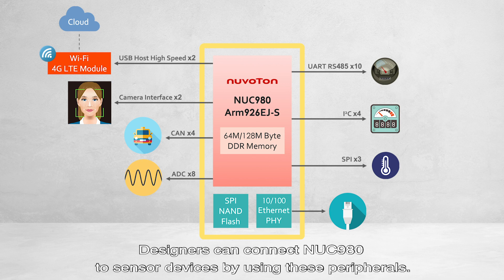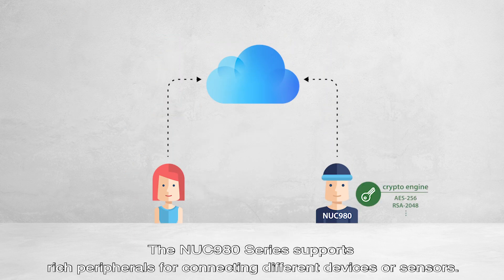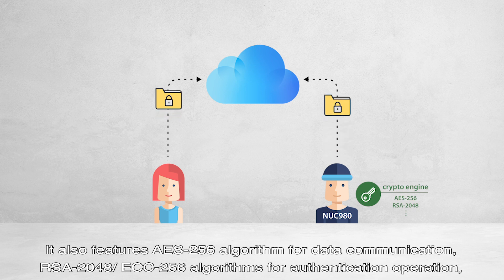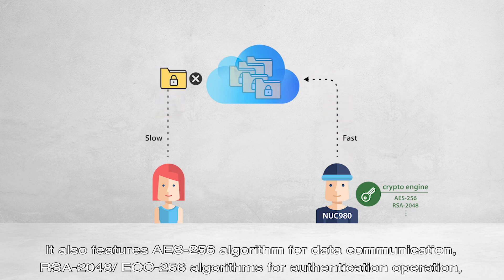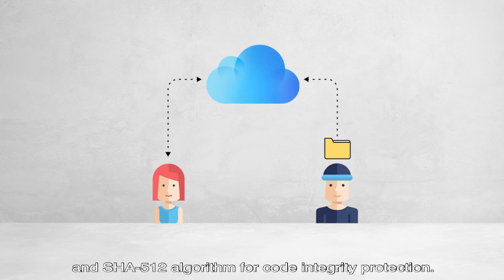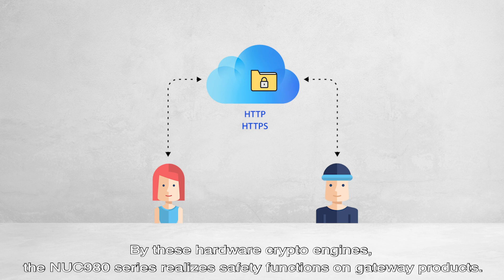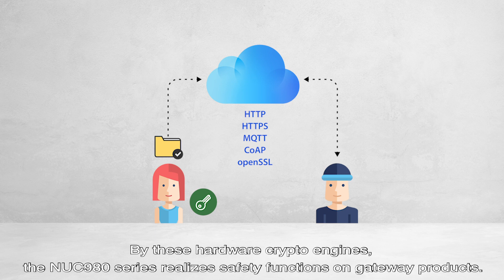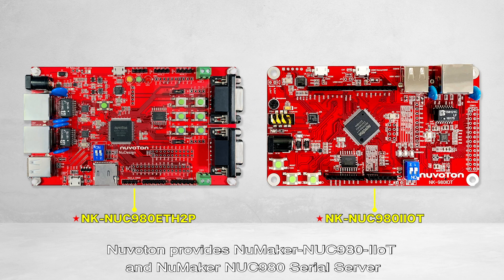Designers can connect NUC980 to sensor devices by using these peripherals. The NUC980 series supports rich peripherals for connecting different devices or sensors. It also features AES algorithm for data communication, RSA ECC algorithm for authentication operations, and the SHA algorithm for code integrity protection. By these hardware crypto engines, the NUC980 series realizes safety functions on Gateway products.